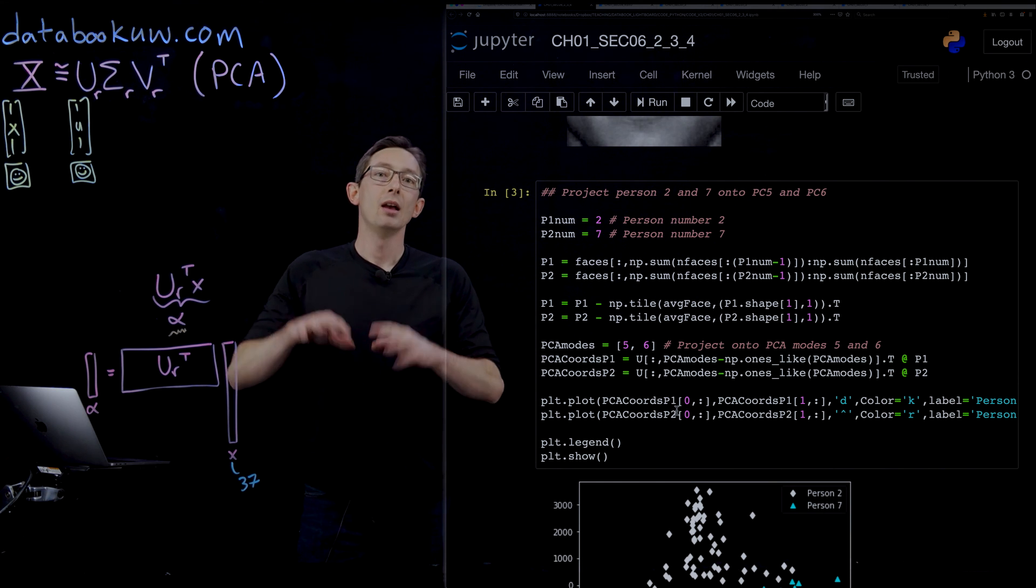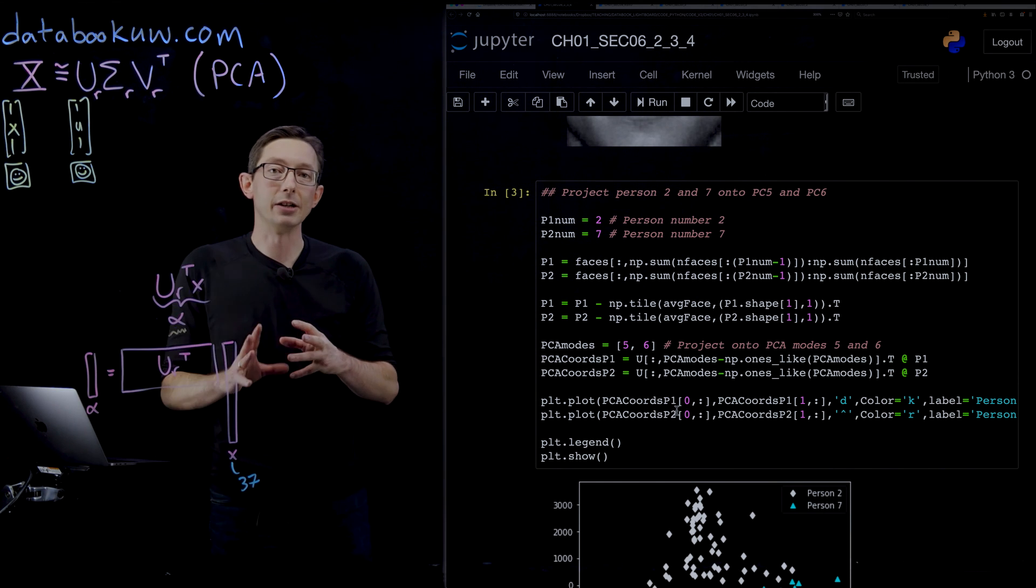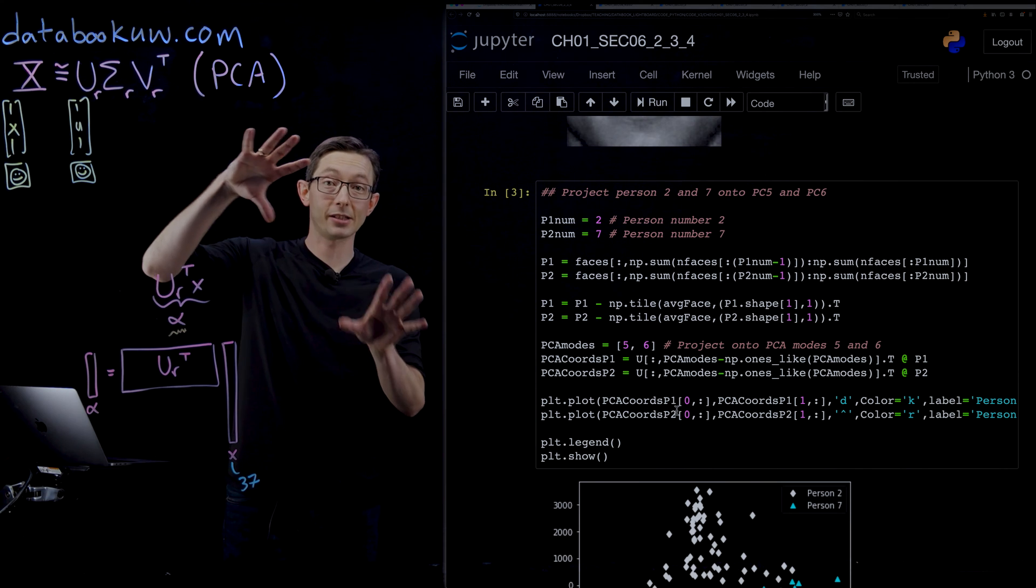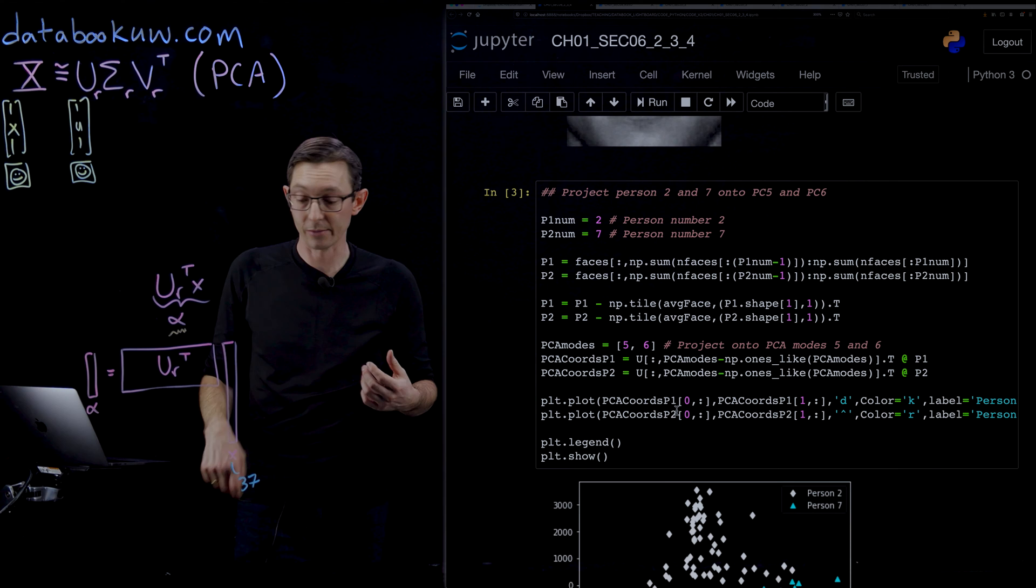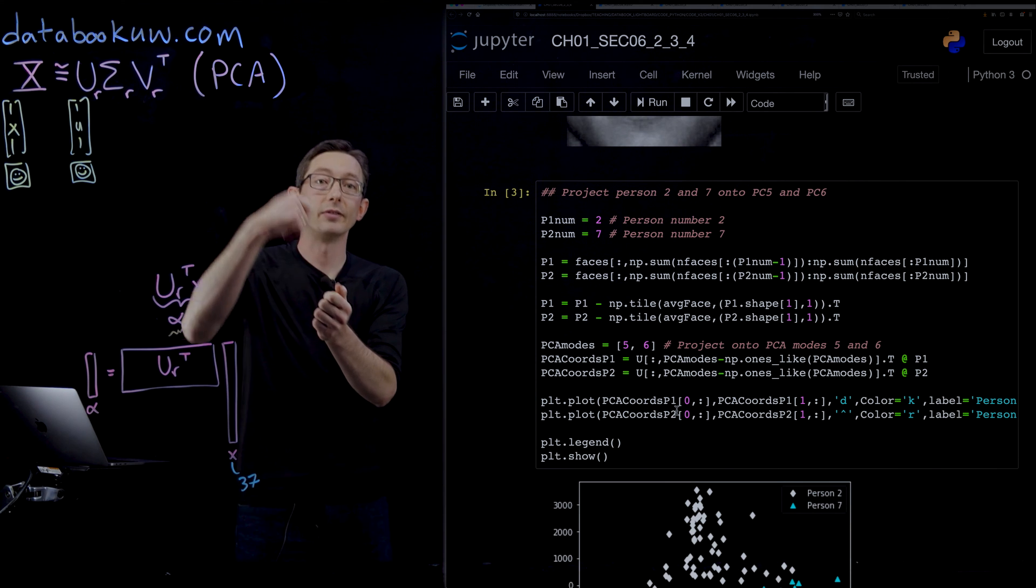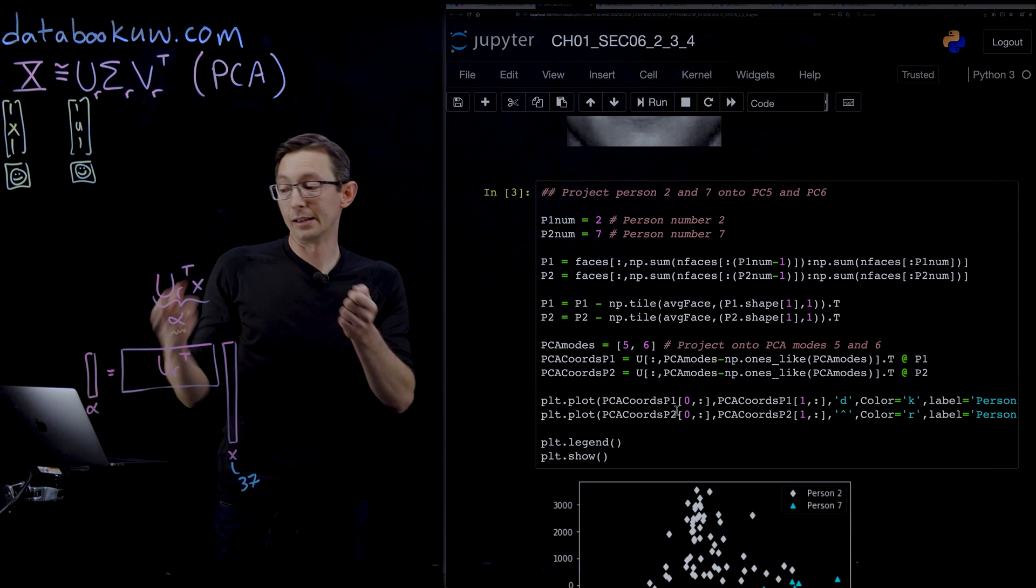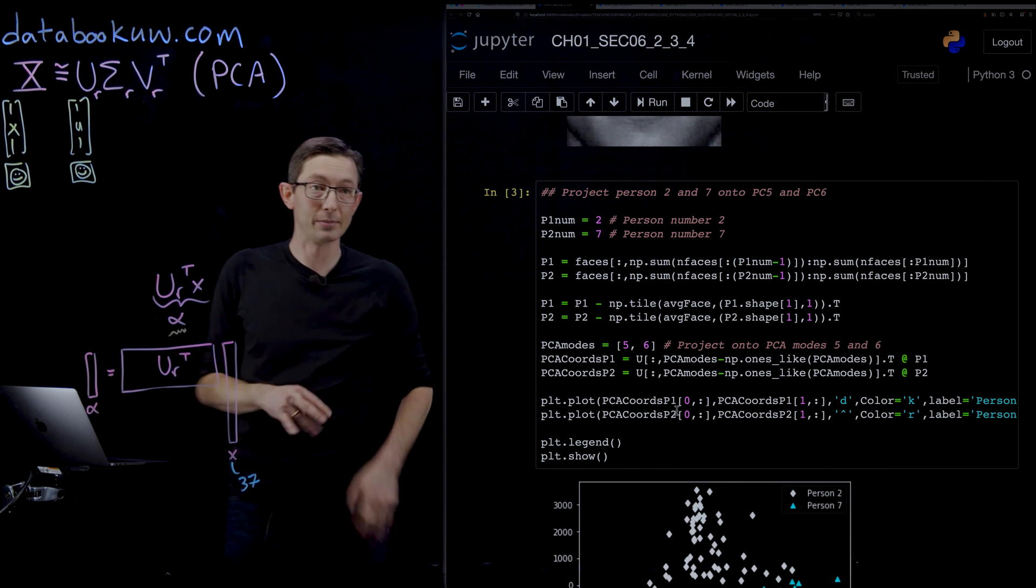In this low-dimensional representation, what we're going to show is that you can have people cluster, and you can use that clustering for building a classification algorithm. So if I have a new picture, I can tell if it's person A or person B based on where it lands in this r-dimensional subspace.